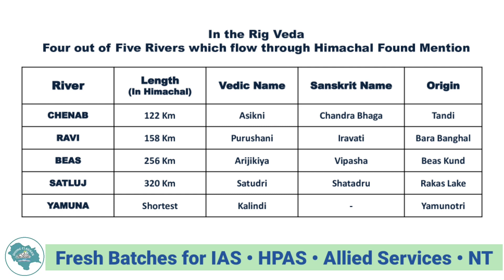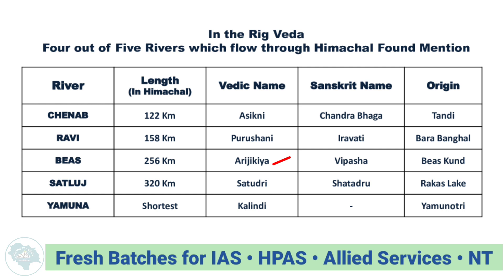Ravi flows 158 km in Himachal, has the Vedic name Purushani and Sanskrit name Iravati. Its origin is in Bara Bangal, Kangra. Beas River flows 256 km in Himachal, has the Vedic name Arijikya and Sanskrit name Vipasha. Its origin is at Beas Kund in Pirpanjal, located near Rohtang Pass.